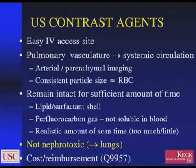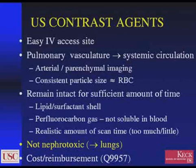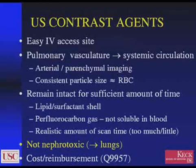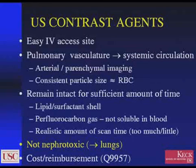For a contrast agent to be practical, it needs to be injected through an easy IV access site. Most of the time we inject these contrast agents through an arm or hand vein, just as we would with IV contrast for CT or MR. In order to see tumors and other structures of interest, these agents have to pass through the pulmonary vasculature and into the systemic circulation to provide adequate arterial or parenchymal imaging. For this reason, the micro-bubbles must be small enough to pass through the spongy filter that is the lung, and having a consistently small particle size — generally about the size of red blood cells with modern agents — is absolutely essential.